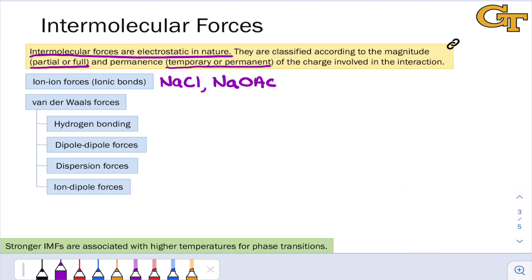Intermolecular forces that do not involve these full permanent ionic charges are collectively known as van der Waals forces. And this term is sometimes misused to just refer to London dispersion forces. But, in fact, all intermolecular forces between partial charges, or involving a partial charge, are collectively called van der Waals forces.